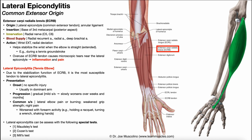Off of the lateral epicondyle, there's a common extensor tendon, and the ECRB is part of that common extensor tendon. We're going to see in just a minute that there are multiple muscles that actually attach onto this common extensor tendon, which then attaches itself onto the lateral epicondyle. The ECRB also has an origin on the annular ligament, but we don't really care about that for these purposes. The insertion of ECRB is going to be the base of the third metacarpal.